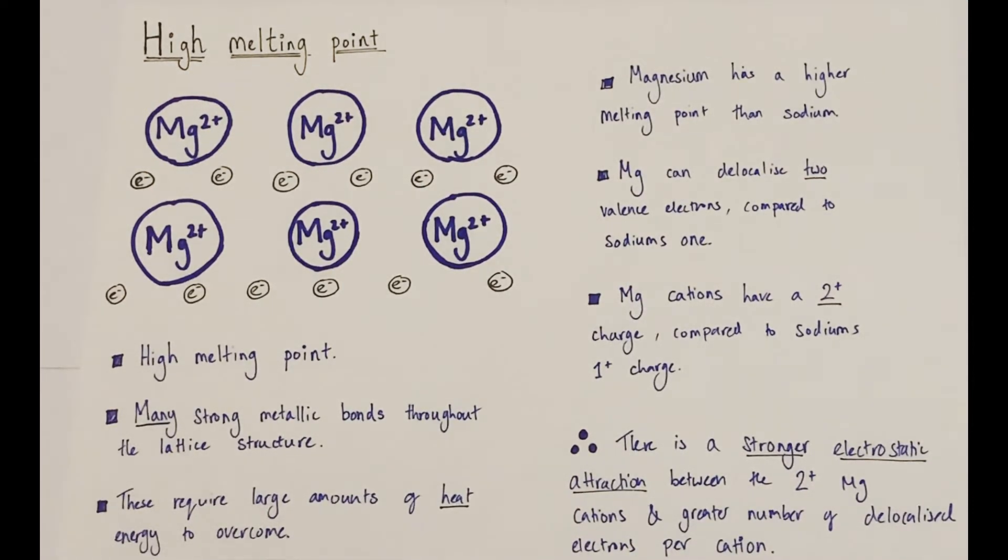We could take a specific case study which will help to understand why different metals have different melting points. So it turns out that magnesium has a higher melting point than sodium. There must be a reason behind this. But if we consider the differences, that will explain the differences in the metallic bonding.